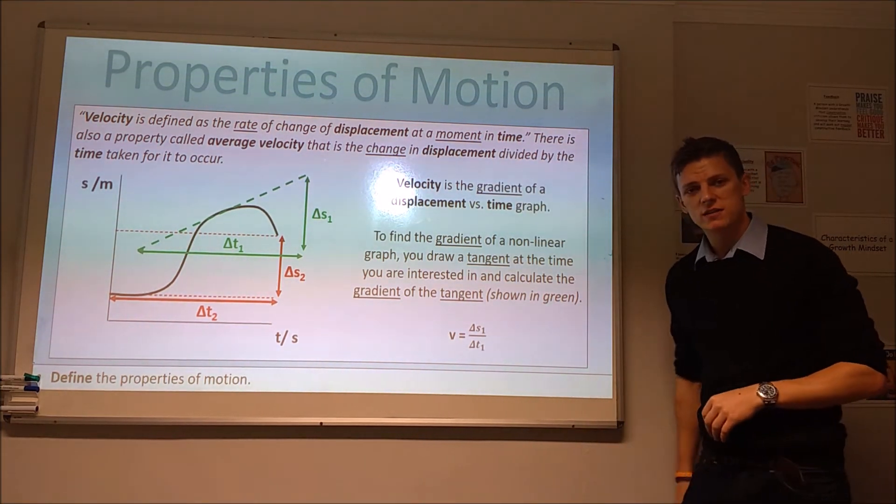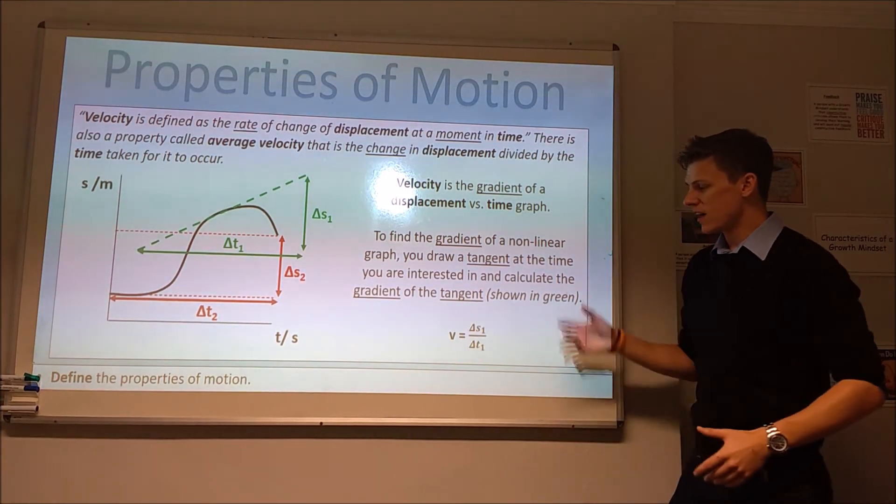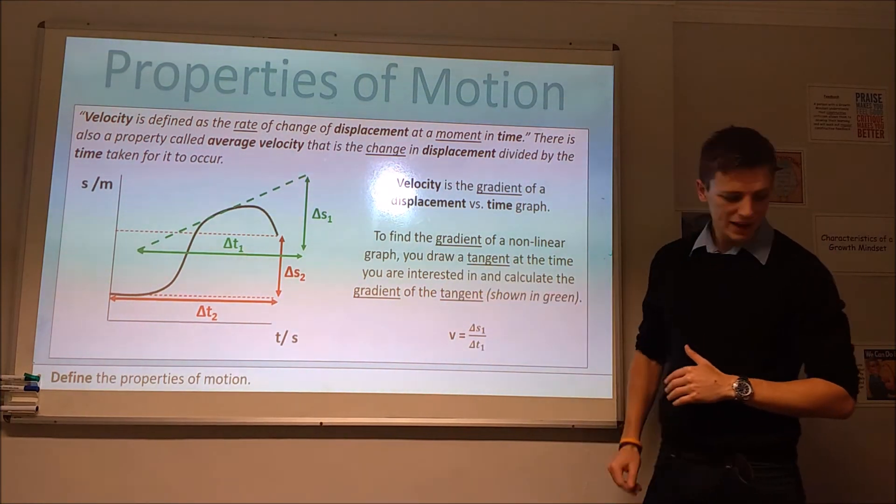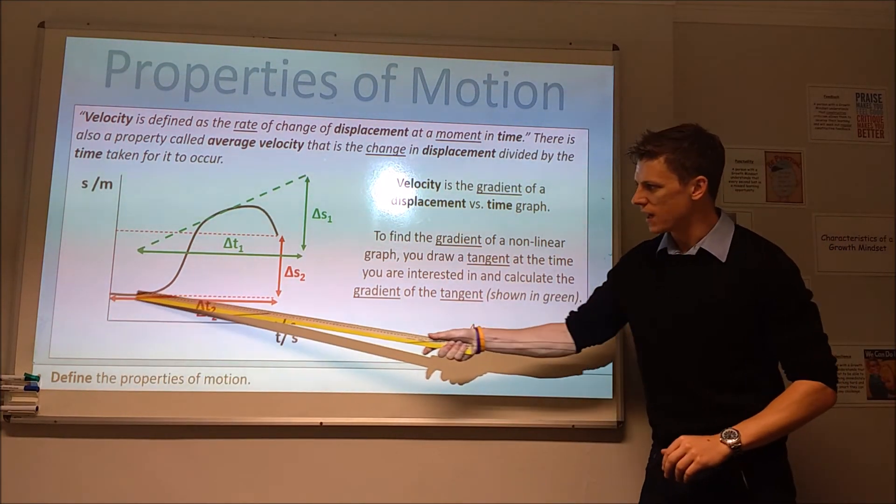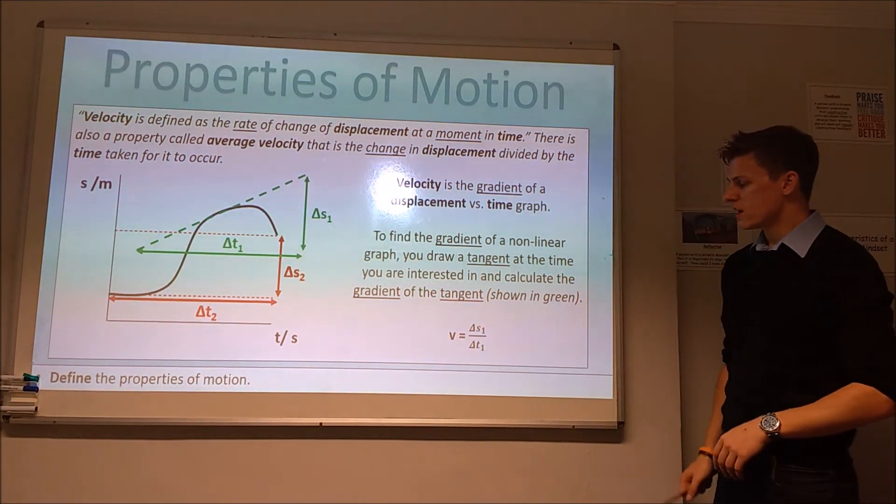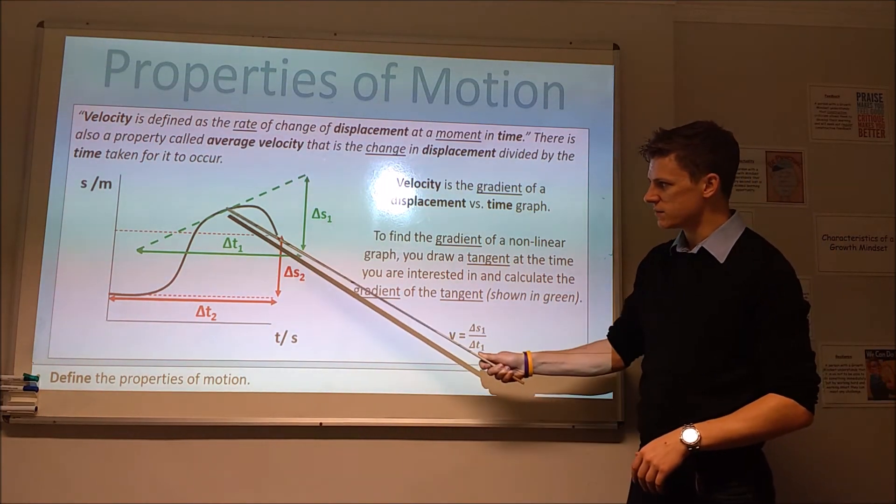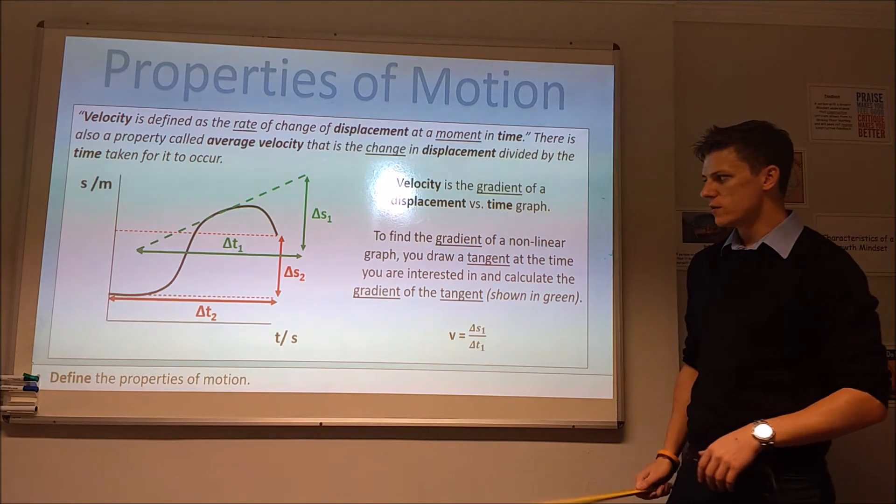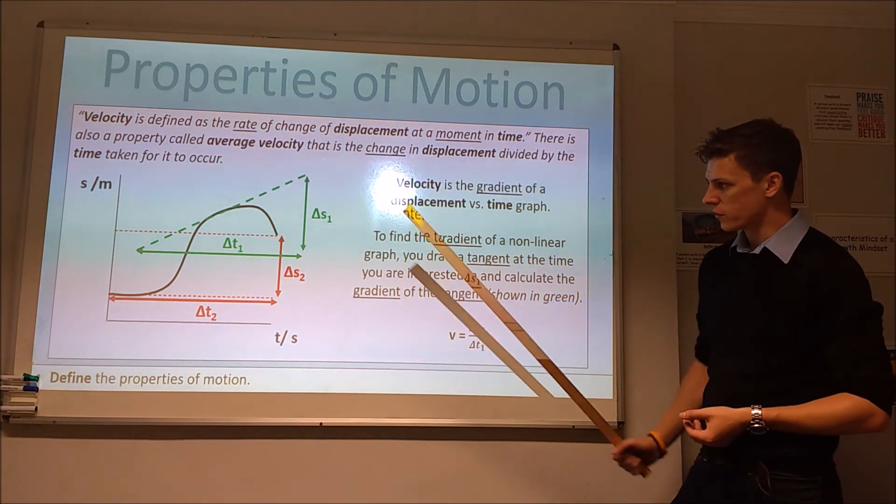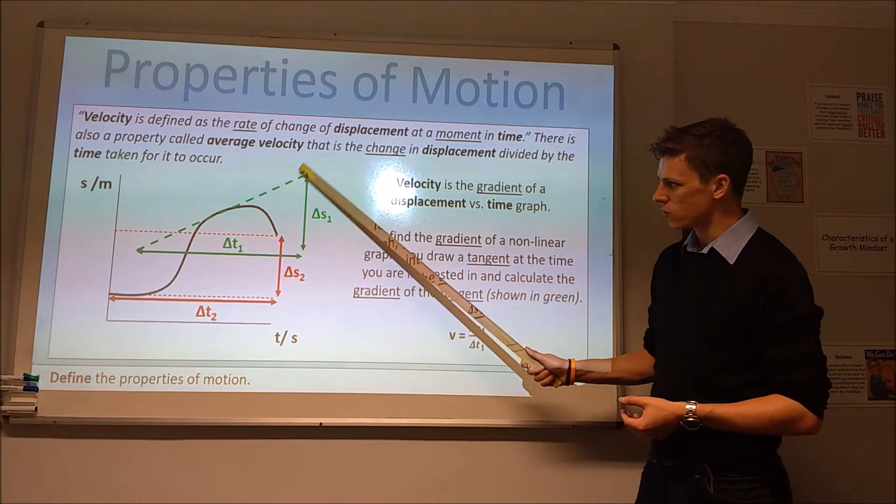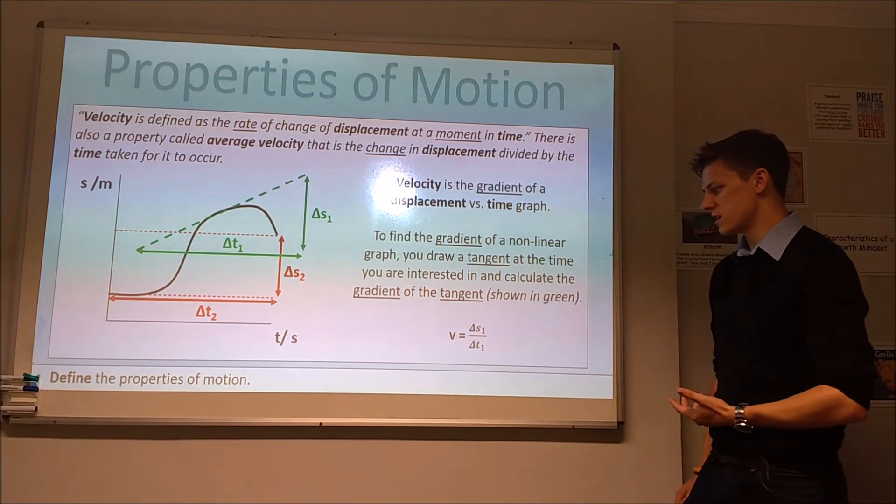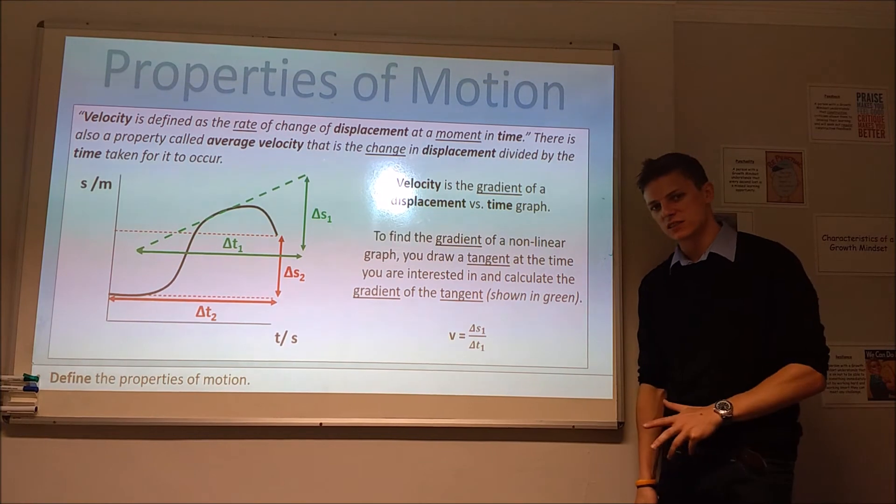If velocity is the rate of change of displacement with respect to time, that means it's the gradient of a displacement versus time graph. In black over here, we've got some very random displacement versus time graph there. If we want to know the velocity at a specific moment in time, say here, we would need to find out what the gradient of that graph was at that point. For a graph that's not a straight line, what that means is we draw a tangent to the graph and figure out the gradient of the tangent. That will be the gradient of the graph. That's how we work out instantaneous velocity.